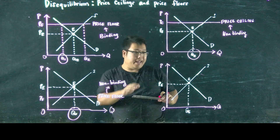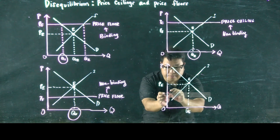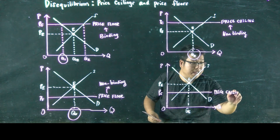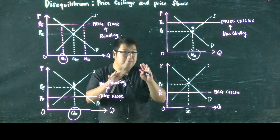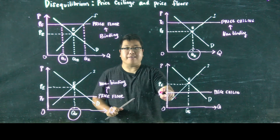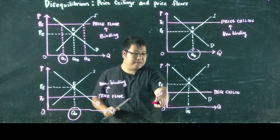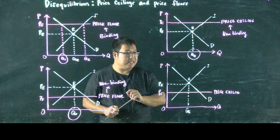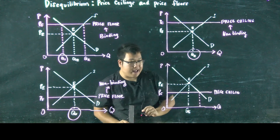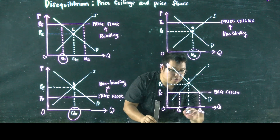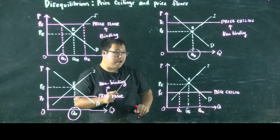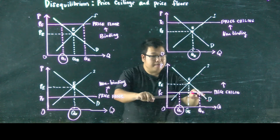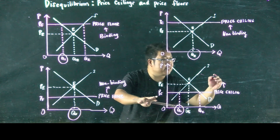Let's say instead that this price ceiling was set below PE — I will call this PC and label it price ceiling. The definition of price ceiling is the highest price that can be charged. So PE cannot be achieved because the highest possible price is PC. The quantity exchanged is the lower of quantity demanded or quantity supplied at PC. Quantity demanded at PC is Q1, and quantity supplied at PC is Q2. So the quantity exchanged at price ceiling PC, set below PE, is Q1. Since PE is not achievable, this is a binding price control.